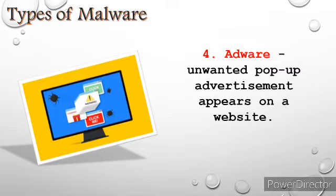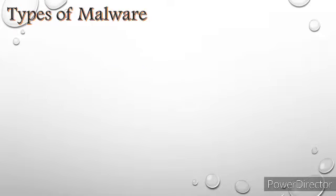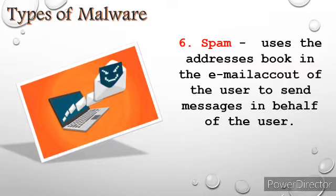Fifth, the Trojan horse poses itself as a file that can be transferred through a storage device or downloaded from the internet. Once it opens, it triggers all the hidden viruses and can cause very serious damage to the operating system and application software. Sixth, spam uses the address book in the email account of the user to send messages or transact accounts on behalf of the user.